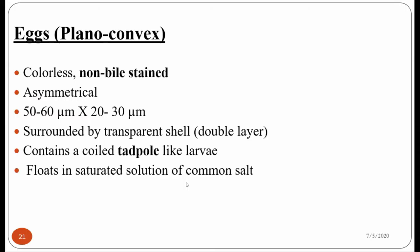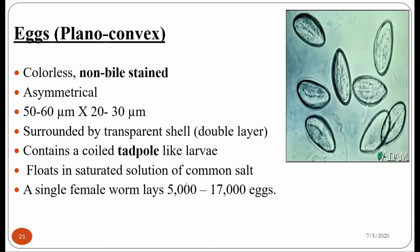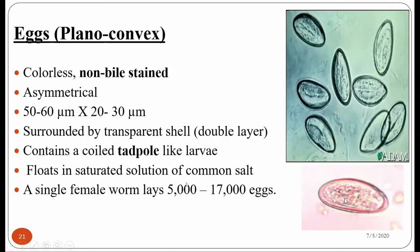The plano-convex ova of Enterobius vermicularis measures about 50 to 60 micrometers in length and 20 to 30 micrometers in breadth. The ova float in saturated sodium chloride solution. During the lifetime of the gravid female worm, it produces approximately 5,000 to 17,000 eggs. This is the picture of the ova — one side is plain while the other is convex; the ventral side is plain while the dorsal side is convex. Inside you can see the coiled larva.